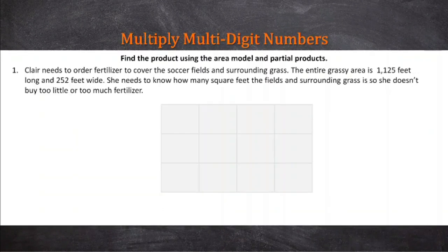First we're going to look at the area model. It says find the product using the area model and partial products. Claire needs to order fertilizer to cover the soccer fields and surrounding grass. The entire grassy area is 1,125 feet long and 252 feet wide. When you encounter a word problem, you need to read it once, then reread it, and then read it a third time.